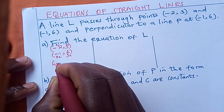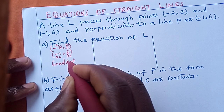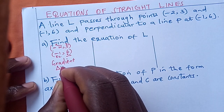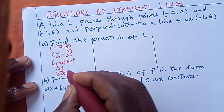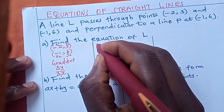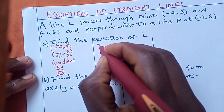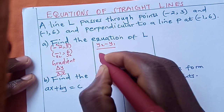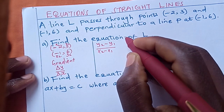We need to find the gradient — that is the first thing. How do we find the gradient? The gradient is given by the change in y over the change in x. The change in y means y2 minus y1 over the change in x, which is x2 minus x1. This is going to give us the gradient.